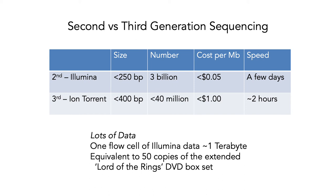I just want to note just how much data these technologies are generating. A single flow cell of Illumina could easily be about a terabyte of data — about the size of a hard drive, which is perhaps three or four terabytes these days. One terabyte is the amount of data from just one flow cell. To put that in perspective, it's equivalent to about 50 copies of the Lord of the Rings DVD set. It's a lot of data, and that means you've got to be able to analyze it. Increasingly, the challenge has gone from generating the sequencing data in the first place to figuring out what you can do with the data once you've got it.